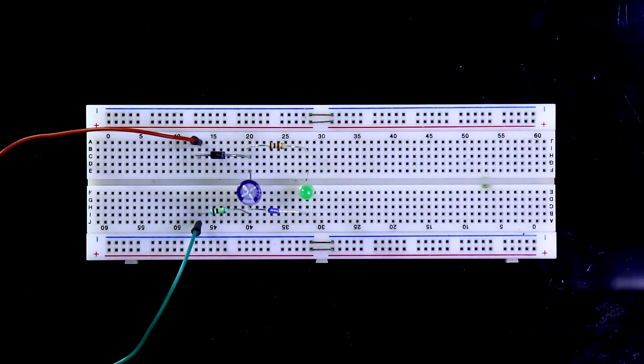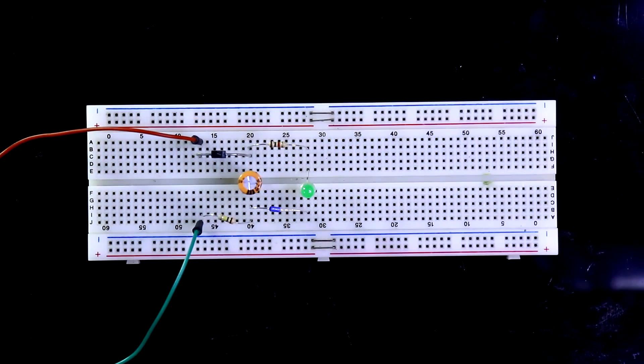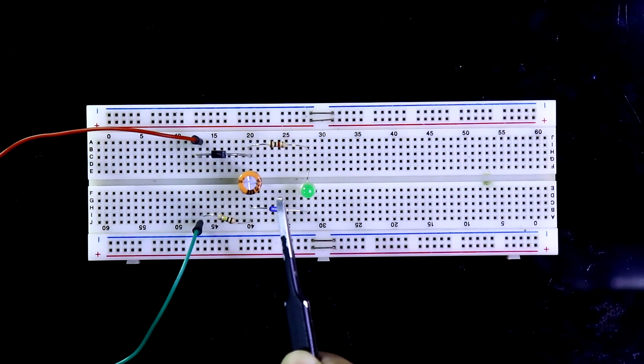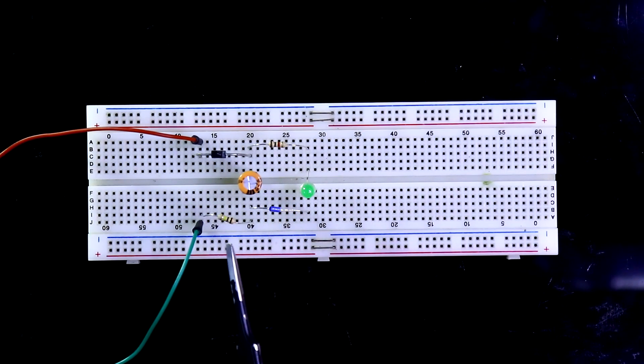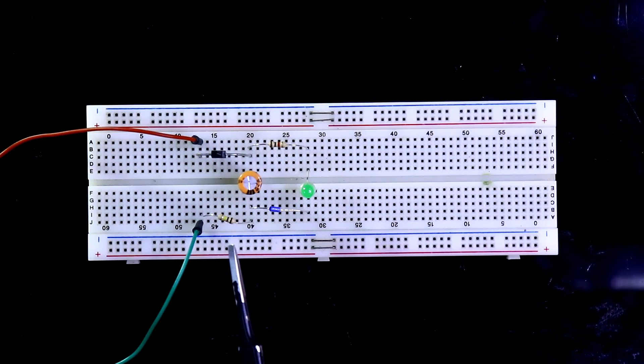If you change the capacitor value and the resistor value then I'll show you. Now the capacitor value is 47 microfarad 50 volt and this resistor value is 100 kilo ohms. Turning on the switch.